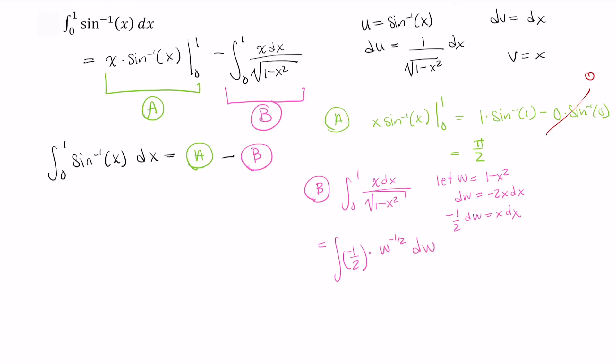And now we need to adjust our limits of integration, since we had a 0 and a 1 here. So when x equals 0, w equals 1 minus 0 squared, or just 1. When x equals 1, w equals 1 minus 1 squared, or just 0. So we replace our lower bound with 1 and our upper bound with 0.